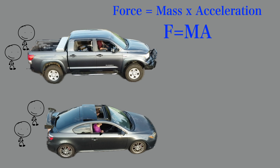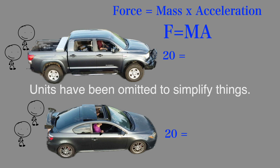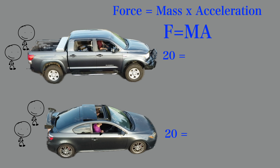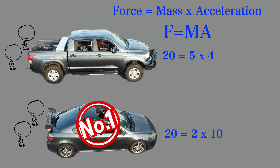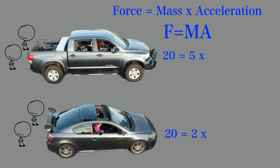However, the masses of the vehicles are very different. Let's represent the mass with a 2 for the car and a 5 for the truck. In order to make our formula work, what kind of acceleration will each of these vehicles experience? The vehicle with less mass must have a much greater acceleration, so the car wins in a blowout.